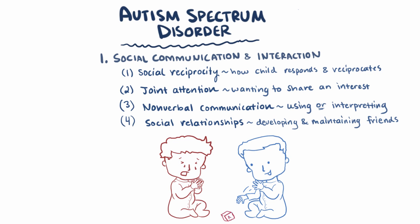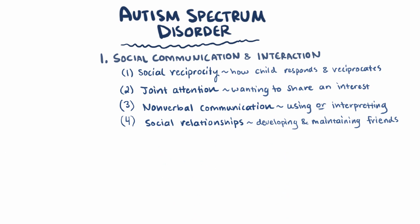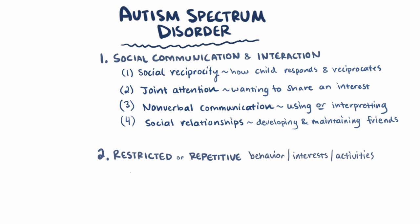The other major area is called restrictive and repetitive behaviors. This category is pretty broad and can include a whole bunch of behaviors, some being more well known or characterized than others, like lining up toys in a ritualistic sort of way, or flapping one's hands, or imitating words or phrases.